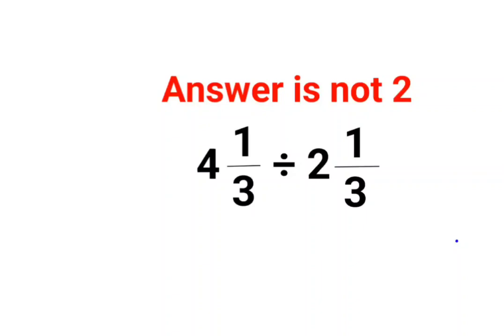Welcome everyone. A lot of people thought that the answer for this one is supposed to be 2 because 1 upon 3 and 1 upon 3 when divided gets cancelled and we are just left with 4 divided by 2, the answer is supposed to be 2.